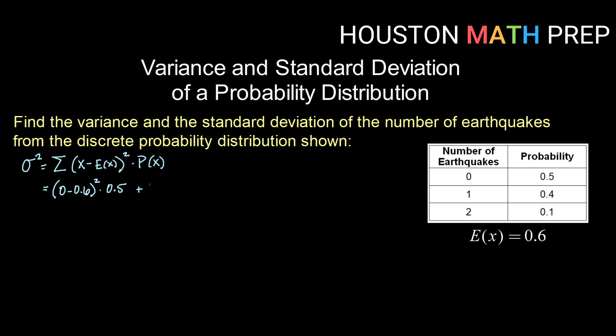Plus, now we'll do the same thing for 1, so that's 1 minus 0.6 squared times the probability that goes with 1, which is 0.4. Doing the same thing for 2, 2 minus 0.6 squared times the probability that goes with 2, or 0.1.